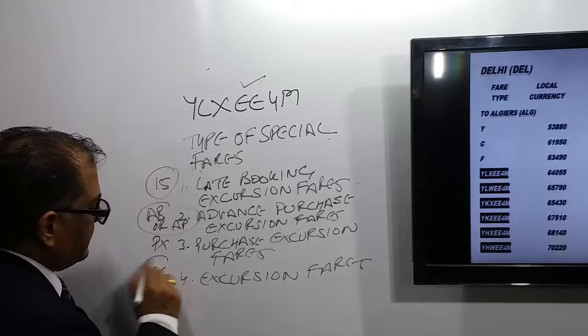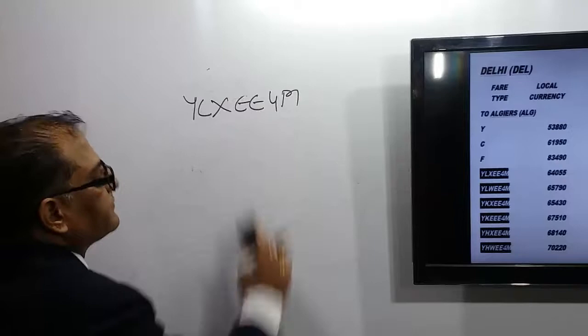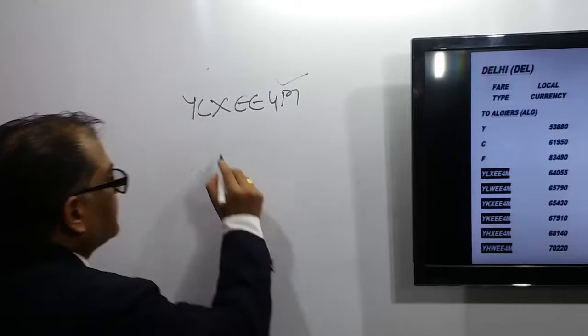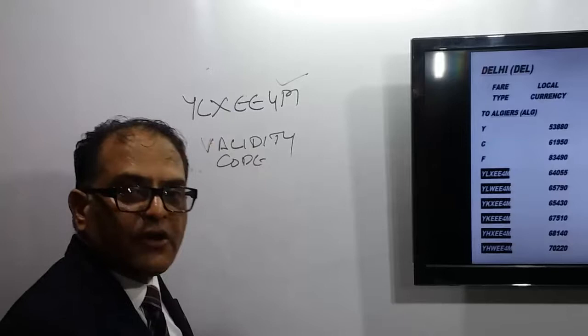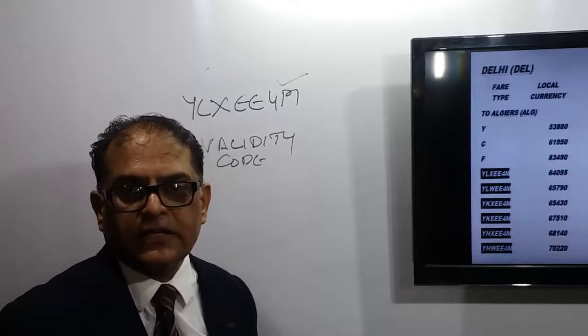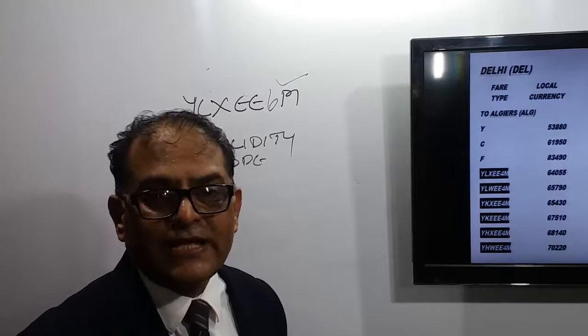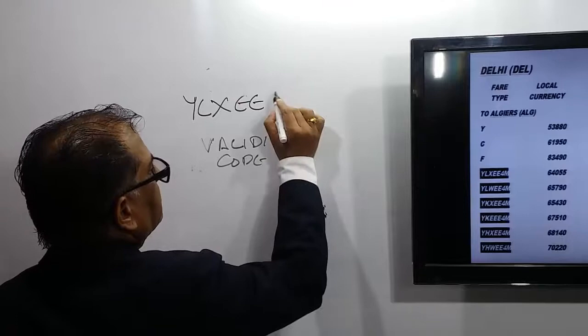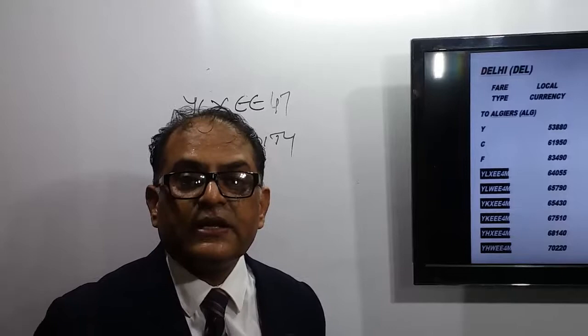Now we'll talk about the last code, which is the validity code. In this fare basis code we have 4M — 4M means this particular special fare is valid for 4 months. If any special fare is valid for days, then the code will look different — for example, 47 means this particular special fare is valid for 47 days, and in that case we do not write a D alongside the number.